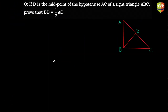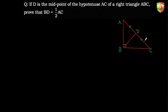Welcome to another problem-solving session on congruent triangles. In this question, it's given that D is the midpoint of hypotenuse AC of right angle triangle ABC. That means AD is equal to DC. You have to prove that BD is half of AC.